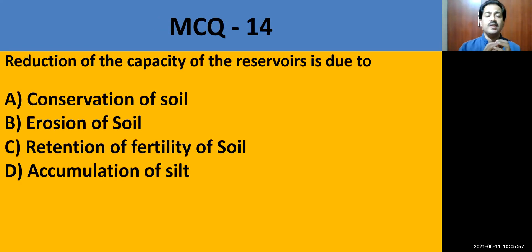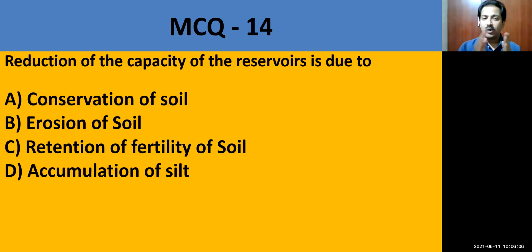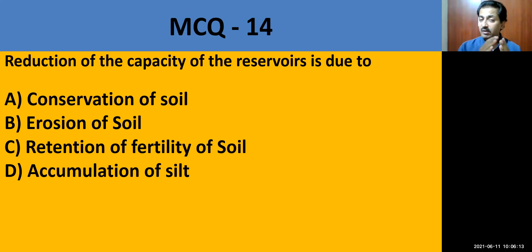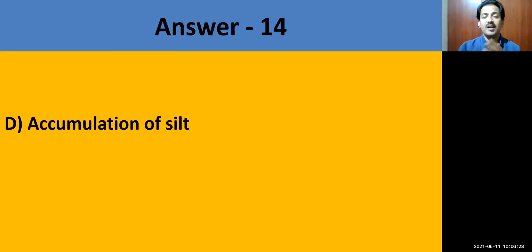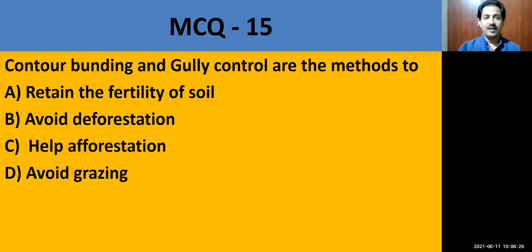MCQ question number 14: Reduction of the capacity of reservoirs is due to — conservation of soil, erosion of soil, retention of fertility of soil, or accumulation of soil. Nowadays, the storage capacity of dams is coming down because of accumulation of silt. The correct answer is accumulation of soil.